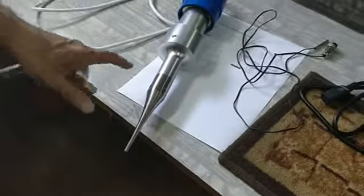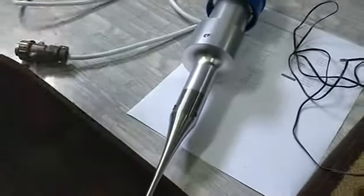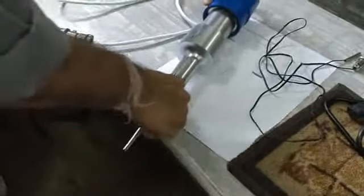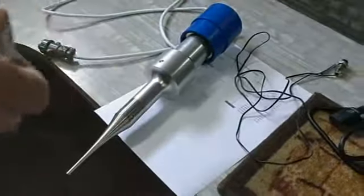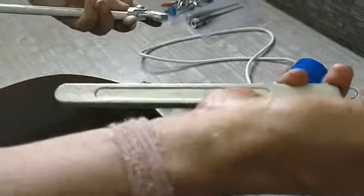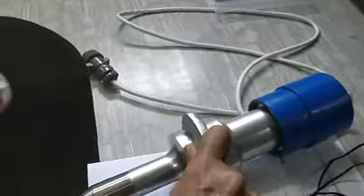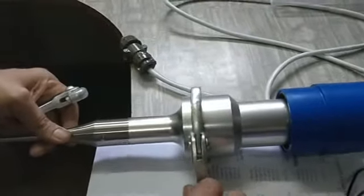Now what we will do is this is a 6mm dia probe, and we will change it to 2mm dia probe. This is not very complicated. There are two special tools. You can see this is a bigger tool and this is a smaller tool. We will have to fix the bigger tool like this.